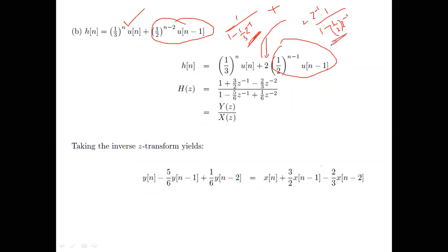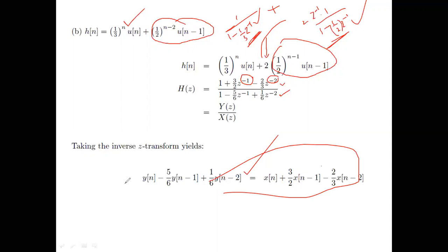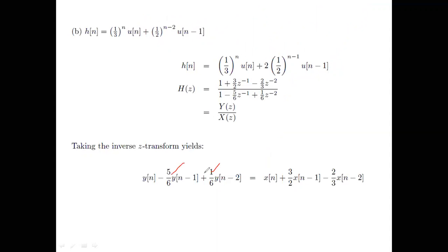Combine into a single numerator and single denominator — all z in negative powers. Then cross-multiply to get the difference equation. This shows why we need to go from impulse response to difference equation: the difference equation tells you exactly how many D flip-flops, multipliers, and adders you need for implementation.